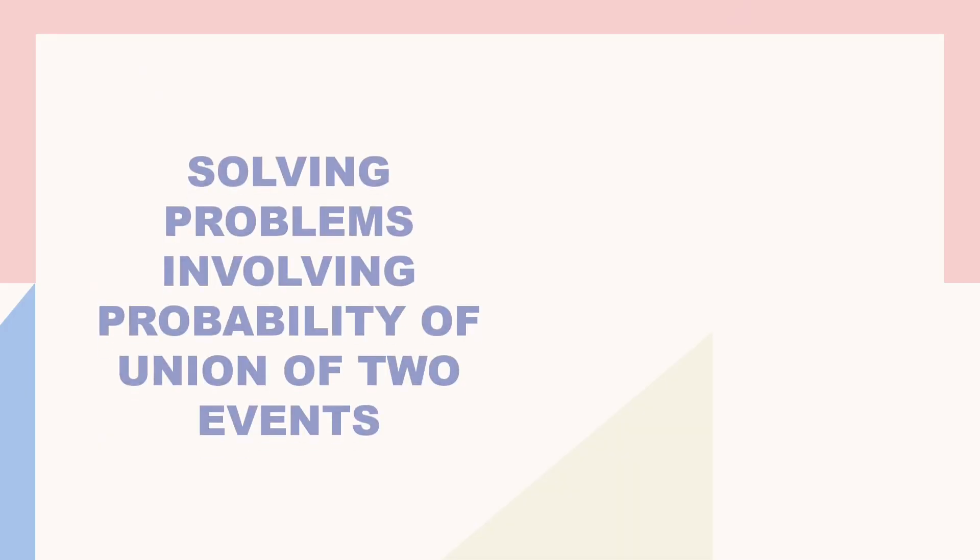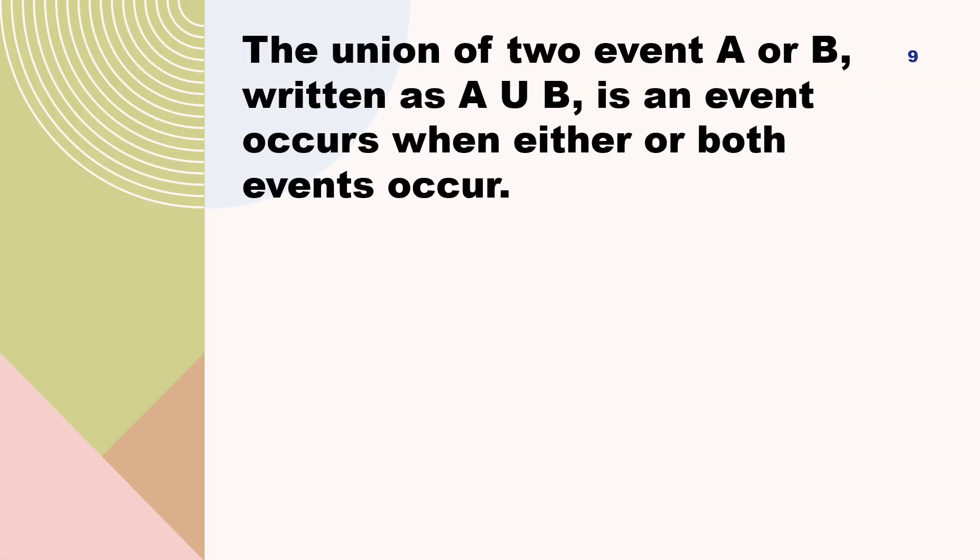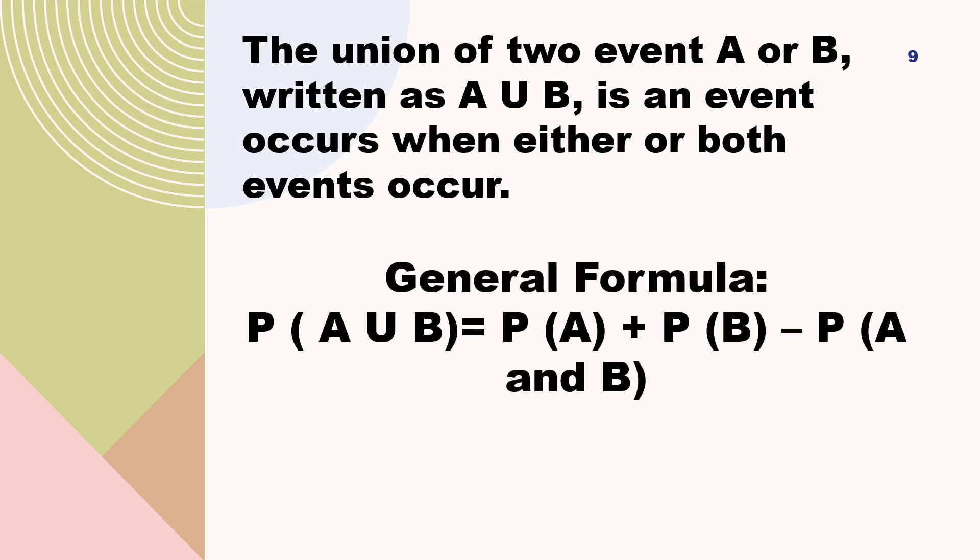These questions are related to our topic for today, which is on solving problems involving probability of union of two events. The illustration is shown on the right. The union of two events A or B written as A union B is an event that occurs when either or both events occur. To find the probability of union of two events, let us use the general formula. The probability of A union B or A or B is equal to the probability of A plus the probability of B minus the probability of A and B.